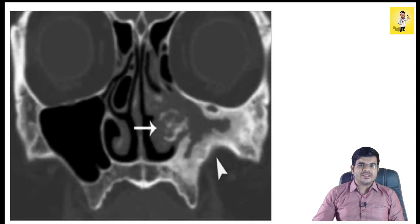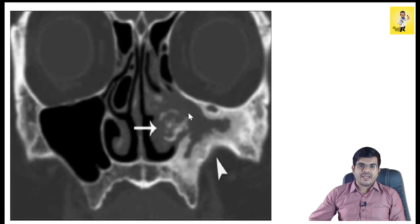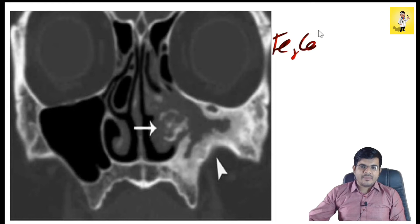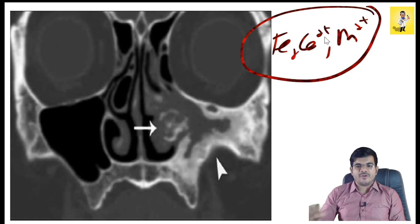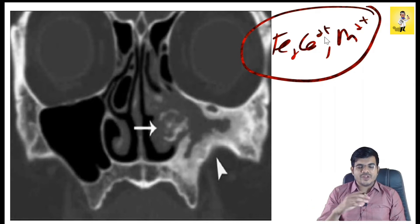Coming to the radiological features: focal areas of heterogeneous hyperdensity are seen on CT, surrounded by hypodense areas. These hyperdense areas occur due to accumulation of iron, calcium, and manganese, which accumulate along with fungal debris. Along with that, there is remodeling and thinning of the sinus walls.